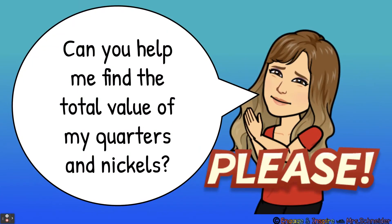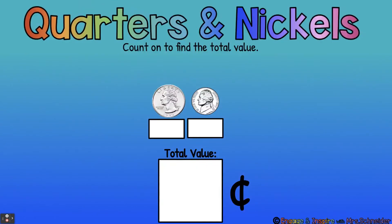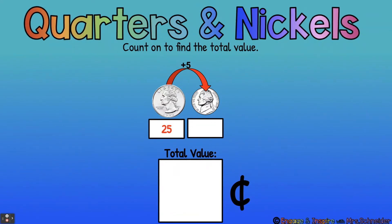Can you help me find the total value of my quarters and nickels? Let's identify the coins first. We have a quarter — 25 cents — plus a nickel — 5 cents. Let's count on to find the total value. 25 plus 5 more: put 25 in our head and count up 5, going 5, 10, 15, 20, 25 — what comes next? 30. So the total value of our coins is 30 cents. Good job.